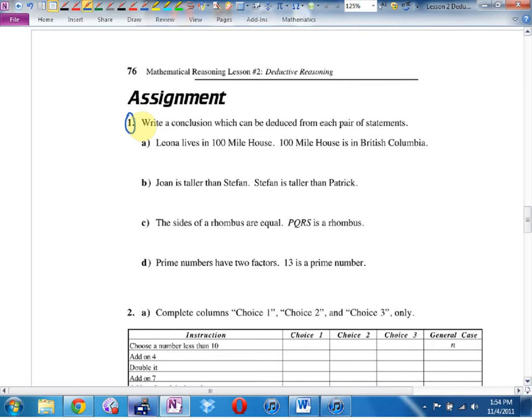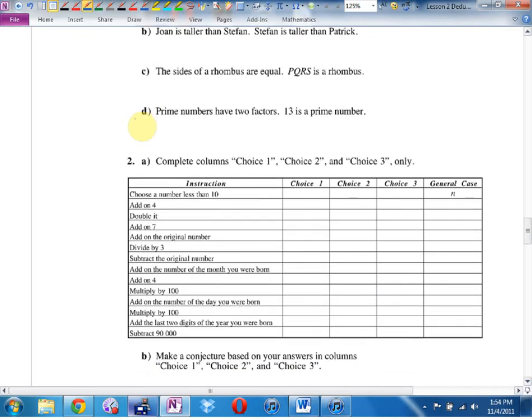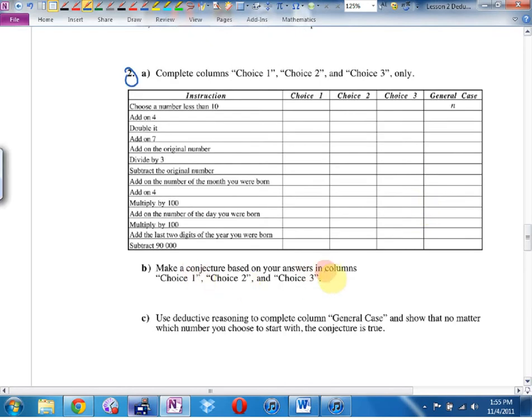So number one, this is how we started out last day with little truth statements. So Leona lives in a 100-mile house. 100-mile house is in British Columbia. What can you conclude? Number two, here is one of those number puzzles. It says, complete columns, choice one, choice two. Try it for three different numbers and you should notice a pattern in your answer when you're done. It may be the same answer or it may look very similar with only slight differences. I haven't tried this one yet.